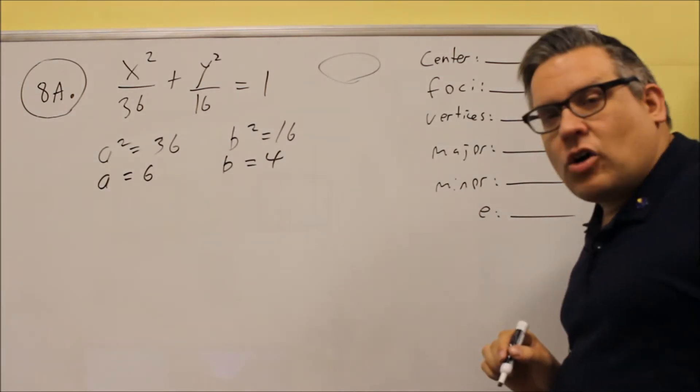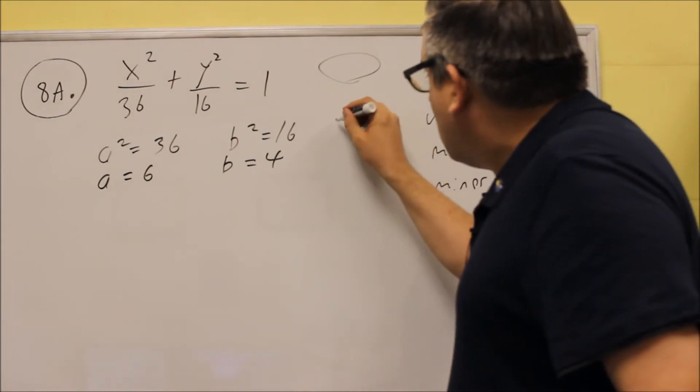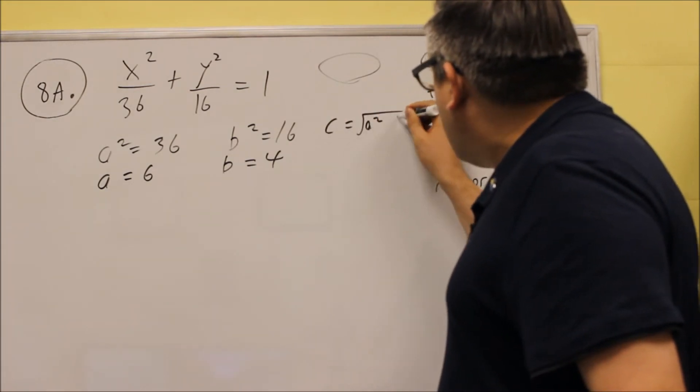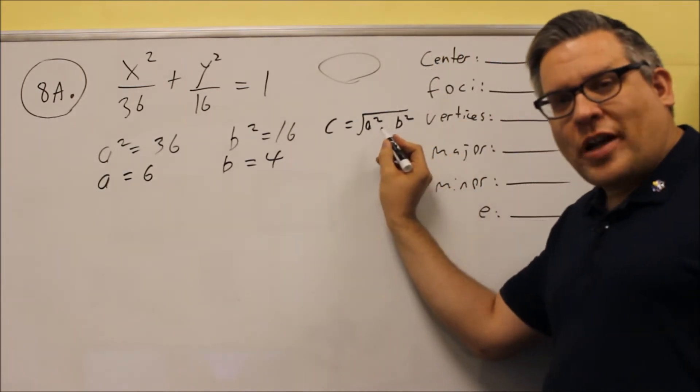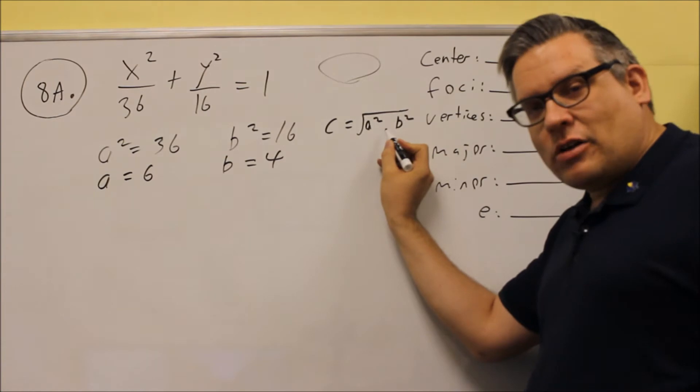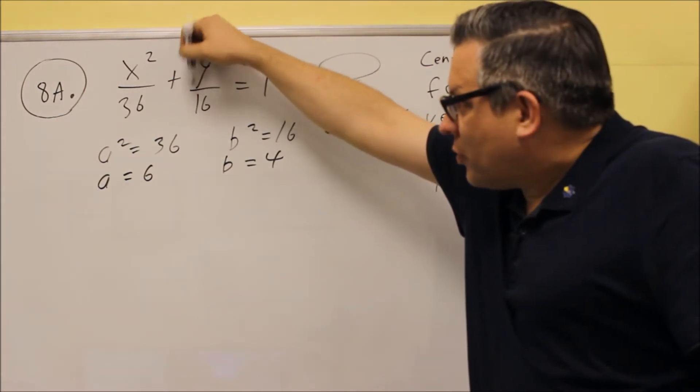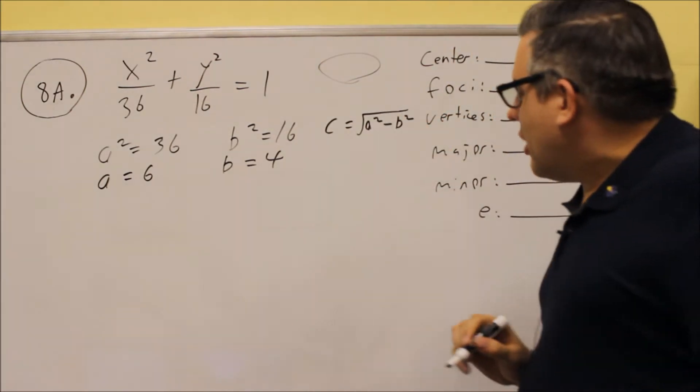We can also find out what our c value is. Now, the formula for c, we know that we have a squared and b squared in there. Now, if you're not sure whether this is plus or minus, remember that the sign you see here is always opposite the one you have in the formula. So if there's a plus here, that means this has got to be a minus. That's how you can tell.